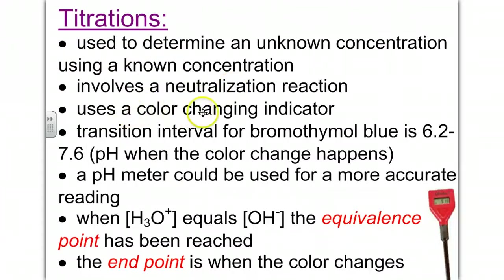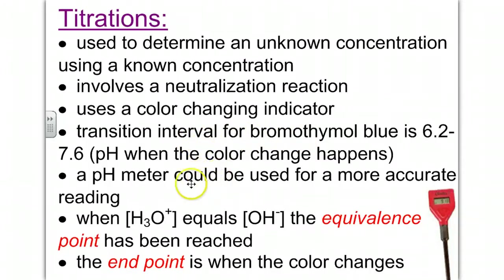It uses a color-changing indicator. For one particular indicator, bromothymol blue, it has a transition interval of 6.2 to 7.6 — that's the pH when the color change happens. A pH meter can be used for a more accurate reading. When hydronium and hydroxide are in equal amounts, you've reached the equivalence point. The end point is recognized when the indicator's color changes.